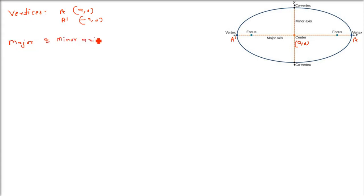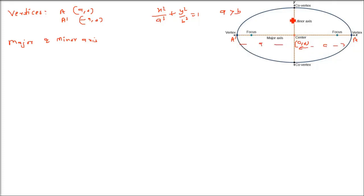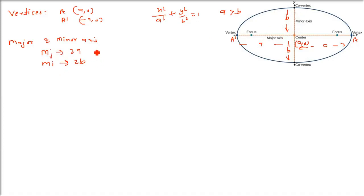For major and minor axes: the equation x²/a² + y²/b² = 1 with a > b gives a horizontal ellipse. The major axis length is 2a and the minor axis length is 2b. The semi-major axis is a and the semi-minor axis is b.